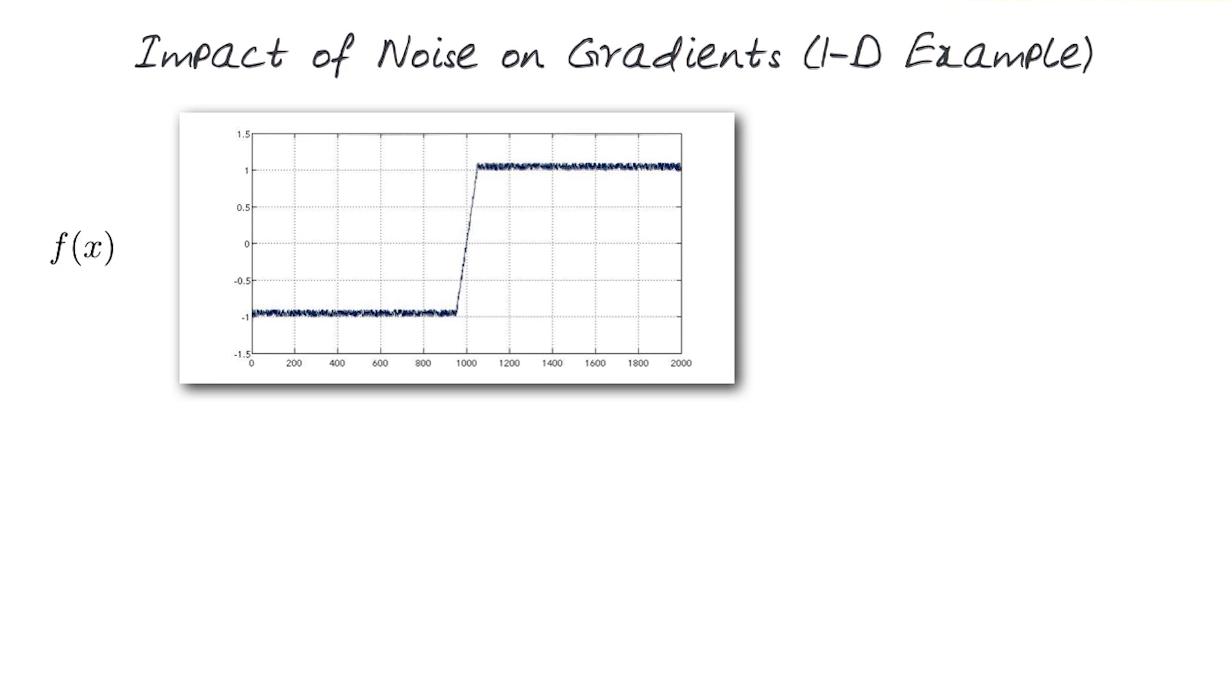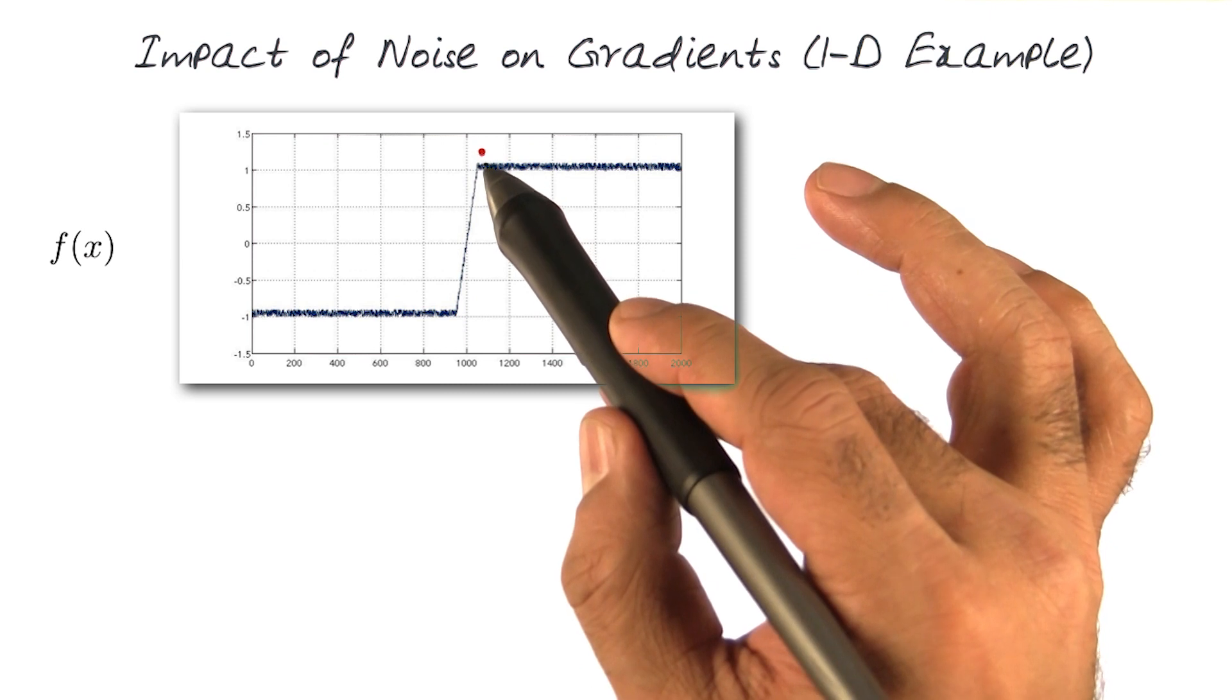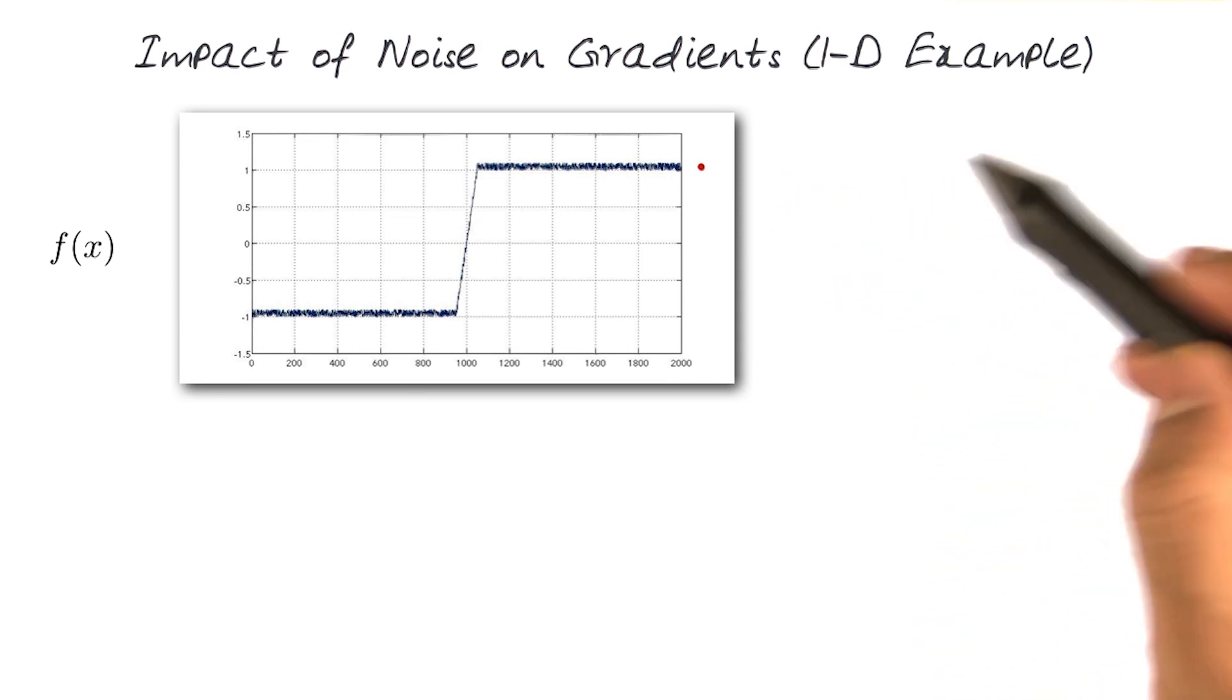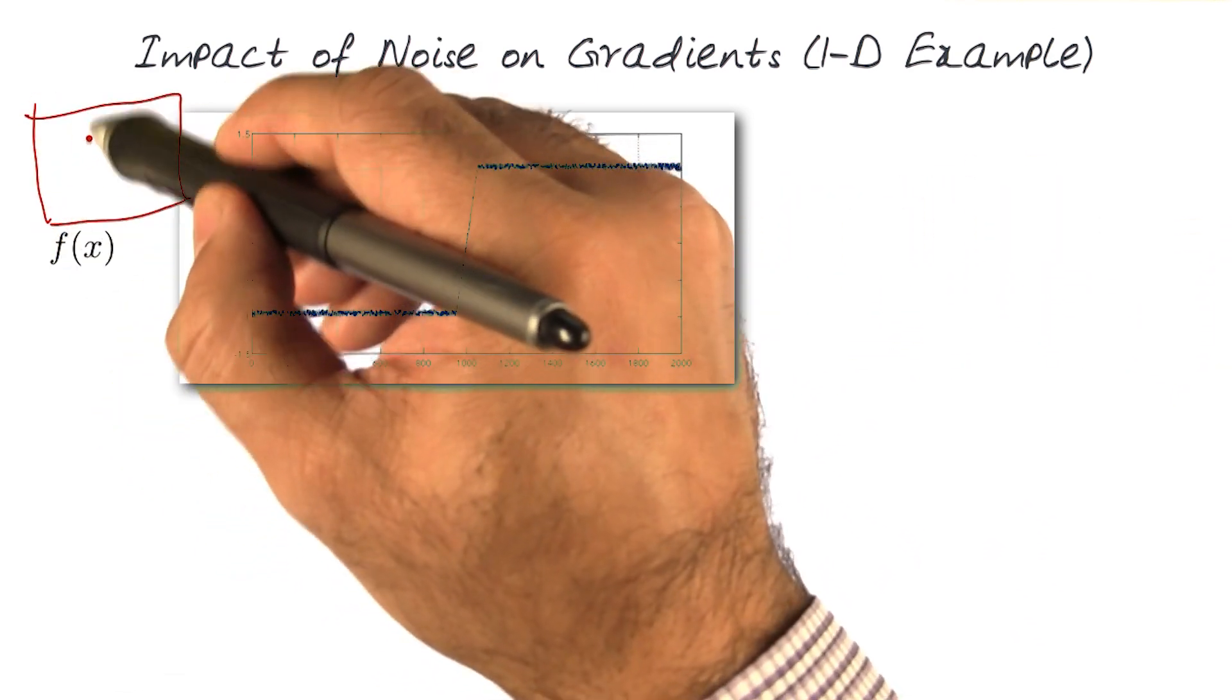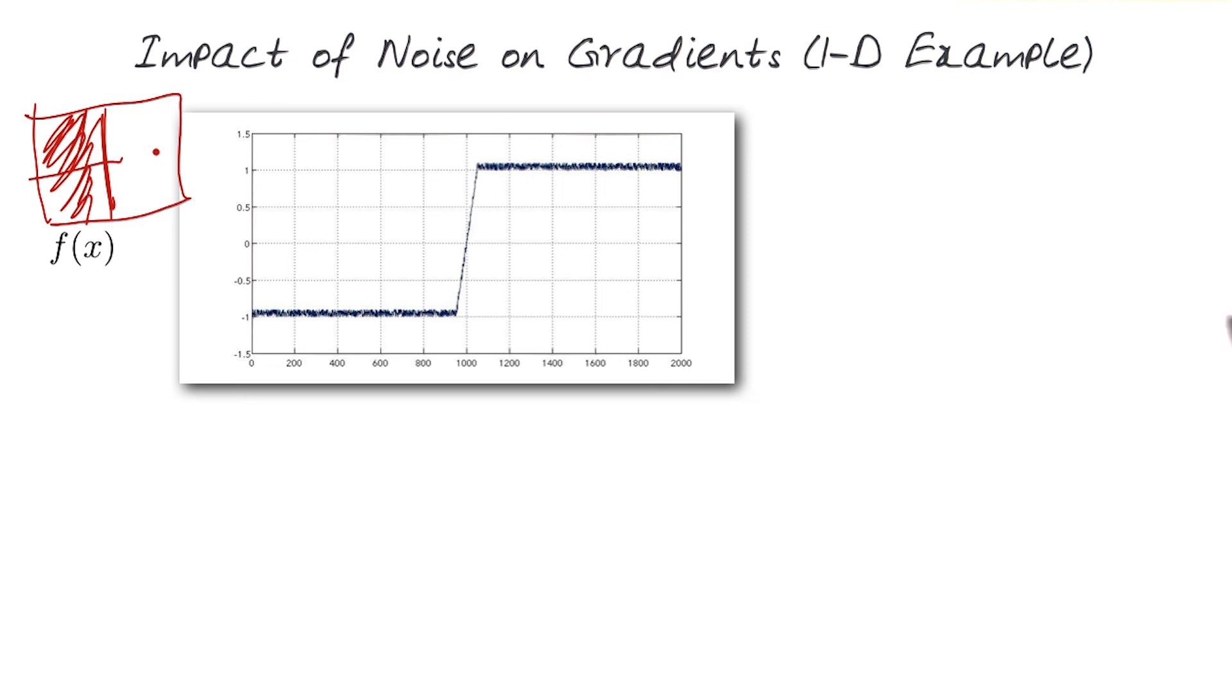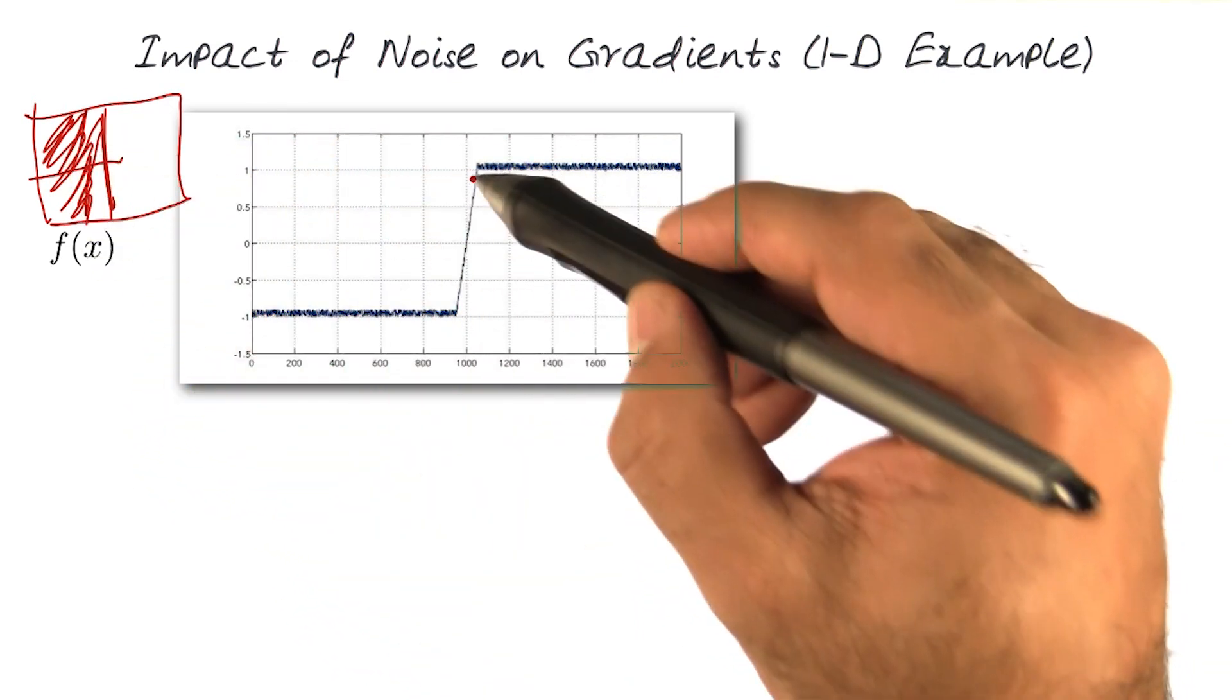Imagine a 1D signal basically has a lot of value down here, minus one, then a ramp up and positive one. You can imagine this to be a simple signal that basically could be an image which has black here and white here, and we're scanning it this way. There's some sort of a blurry boundary between them, therefore the ramp.